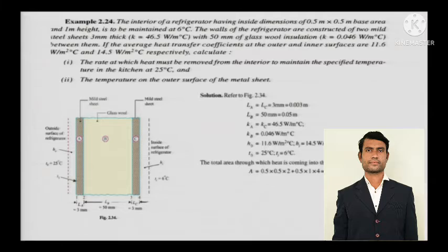You need to calculate the rate at which heat must be removed from the interior to maintain the specified temperature in the kitchen at 25 degrees Celsius and the temperature on the outer surface of the metal sheet. Everything will be the same, only the values and numerical have changed.